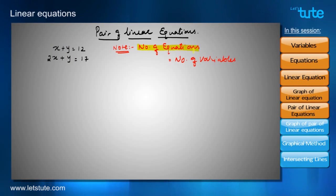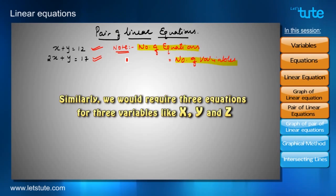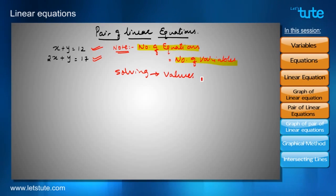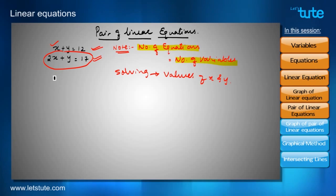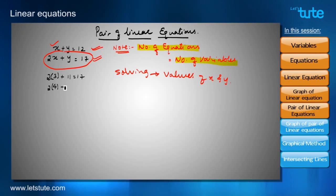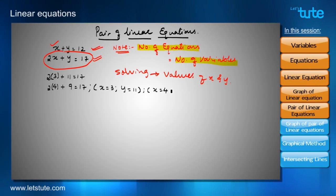To find the values of the variables, the number of equations must always equal the number of variables. Here we have two equations and two variables, X and Y. Solving means finding the values of X and Y. For the graph of 2X plus Y equals 17, let's assume some values: if X is 3 then Y is 11 (since 2×3=6, and 6+11=17); if X is 4 then Y is 9 (since 2×4=8, and 8+9=17).